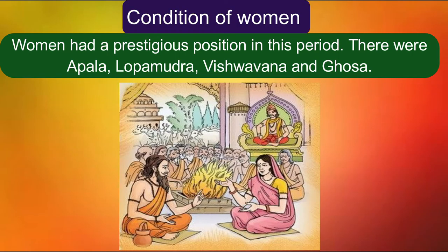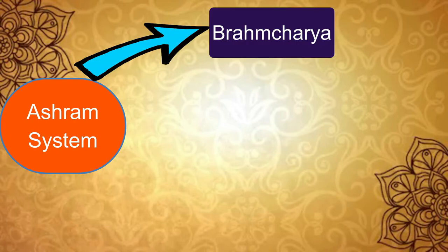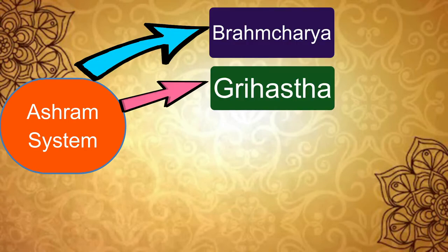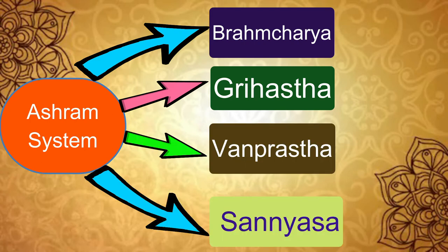Regarding the condition of women, women had a prestigious position in this period. Notable women included Apala, Lopamudra, Vishwavara, and Ghoshya. Regarding the Ashram system, Aryans divided life into four stages: first Brahmacharya, second Grihastha, third Vanaprastha, and fourth Sannyasa.